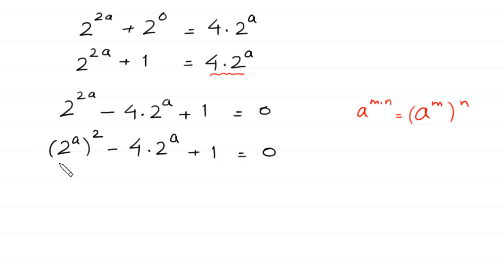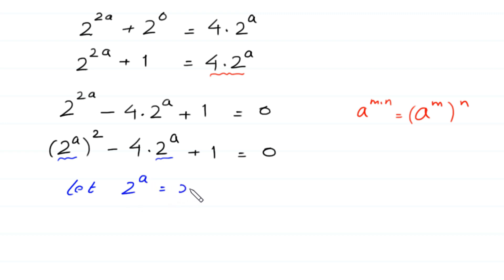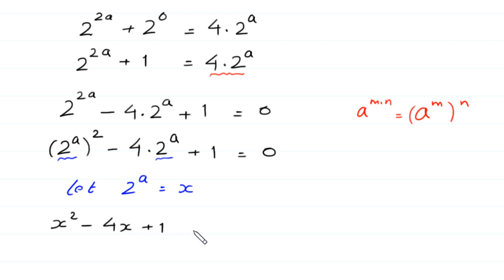We notice 2 to the power a appears twice. So we let x equal 2 to the power a and substitute into the equation. This gives us the quadratic equation: x squared minus 4x plus 1 equals 0.